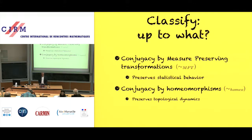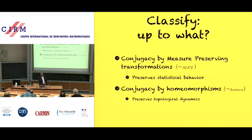The other choice, if you have a topological space with additional structure beyond a measure, is to classify conjugacy by homeomorphisms. Or even if you don't have a measure, if you just have a diffeomorphism, this preserves the topological dynamics and the kinds of topological properties.